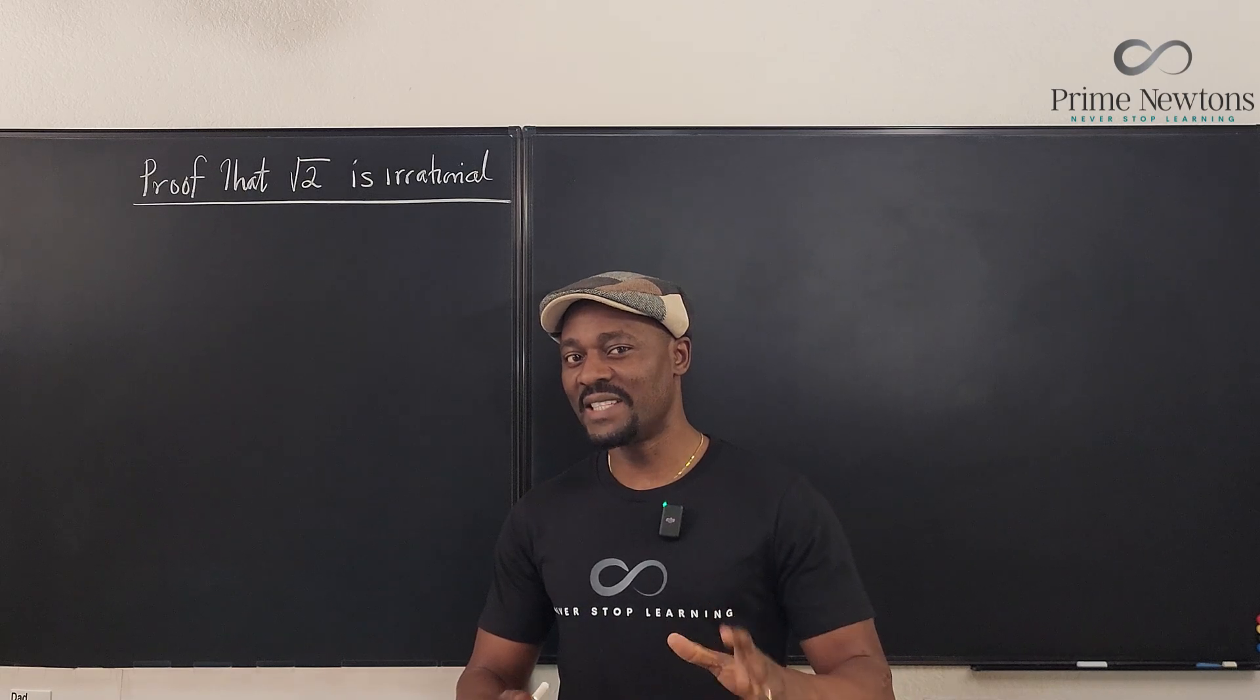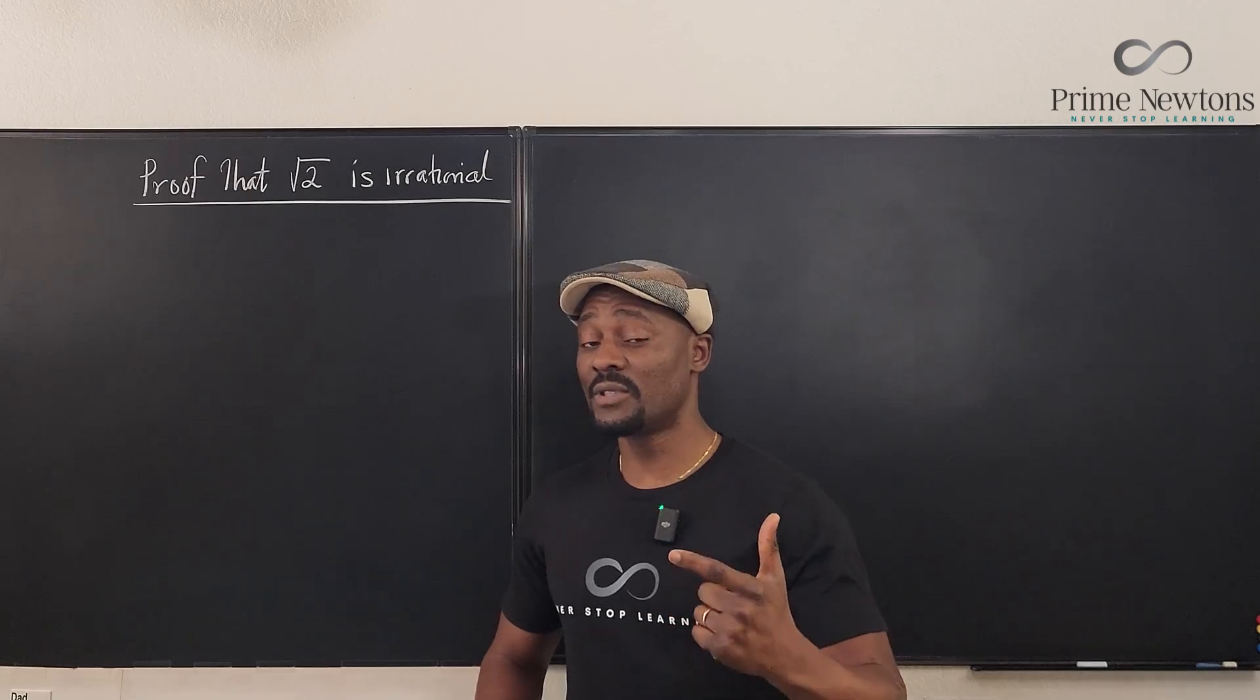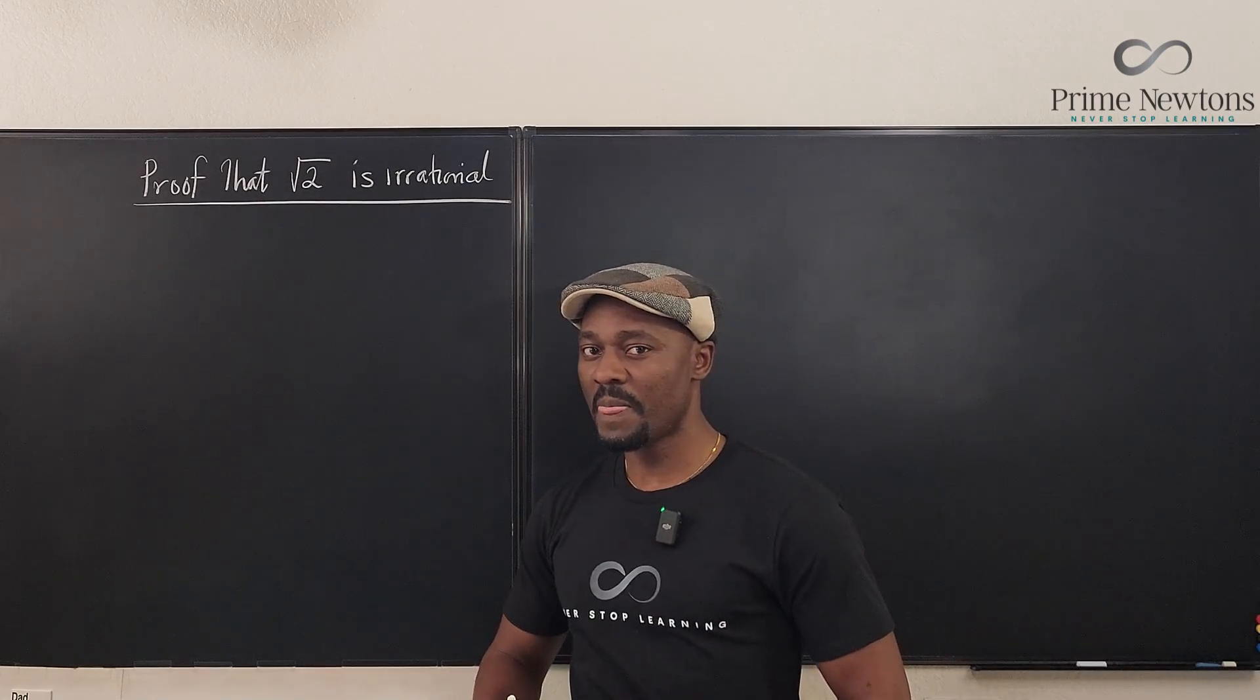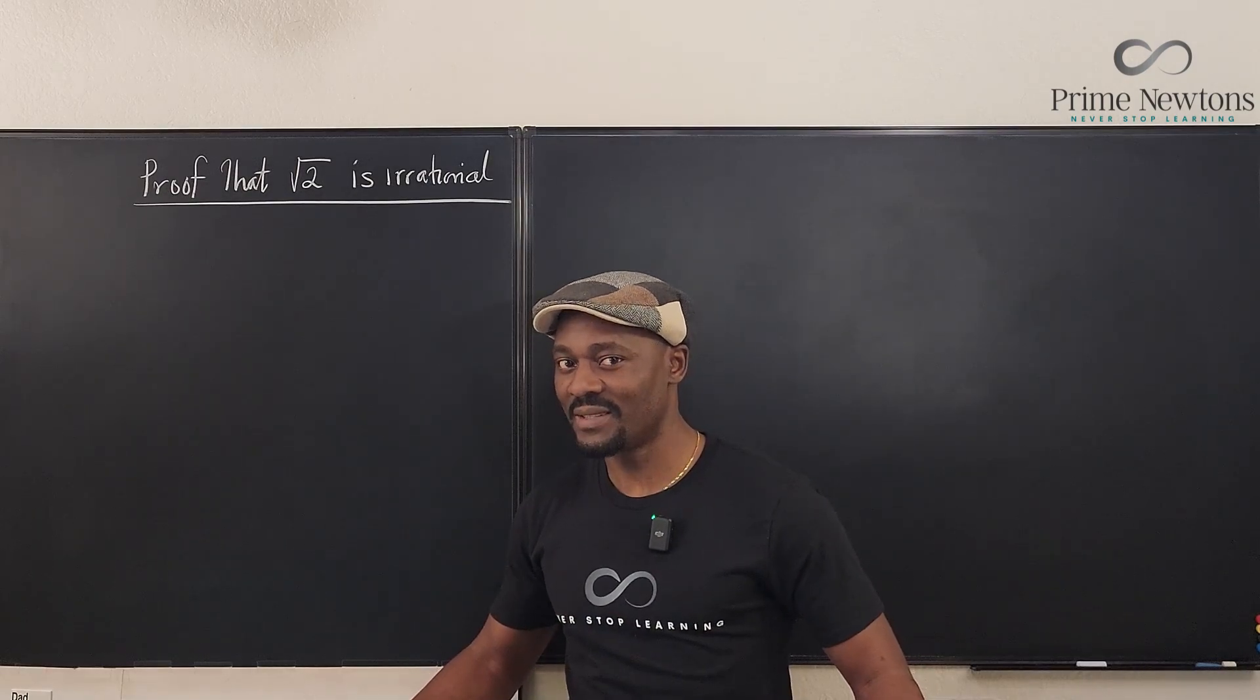When I was in high school, I did argue in my mind that we do not have sufficient information to show that the square root of 2 is irrational. How did I come to this?